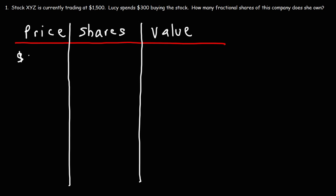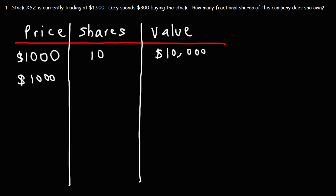Let's say we have an expensive stock which is trading at $1,000. If you own 10 shares of the stock, the value of your investment is going to be 10 times $1,000, or $10,000. If you own one share of the stock, the value of the investment is $1,000.